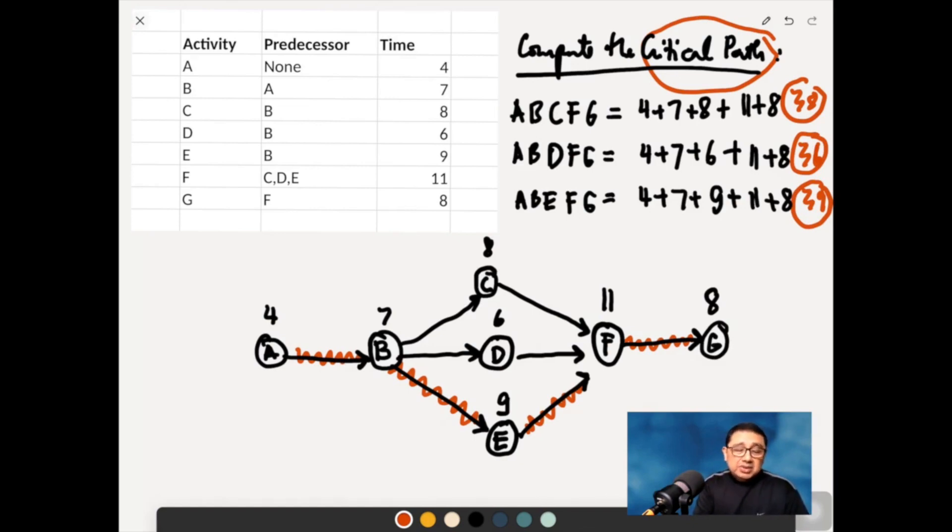So what are some of the implications here? Perhaps in negotiations, what you can do is you take a look at 38 and 39. A, B, C, F, G. There's a difference of 1 here. And this is what you call your slack.